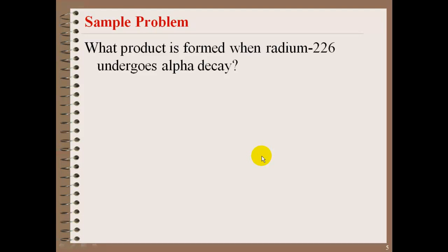So what product is formed when radium-226 undergoes an alpha decay? To do this, we're going to write what we already know. We know radium, which is Ra, and it's 226. Look up the proton number on the periodic table, and that is number 88. It goes through an alpha decay, so we know that the particle is 4-2-He, which is alpha. So what must be produced? Well, 226 minus 4 is 222, and 88 minus 2 is 86. So we are looking at radon.